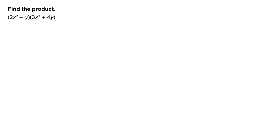Find the product of the quantity 2x squared minus y times the quantity 3x squared plus 4y. First, write the quantity 2x squared minus y times the quantity 3x squared plus 4y.